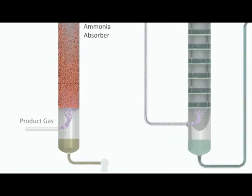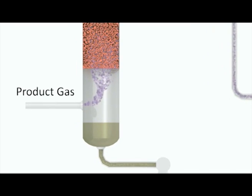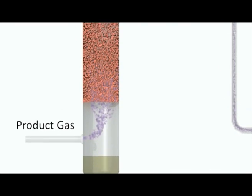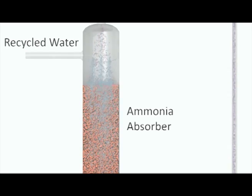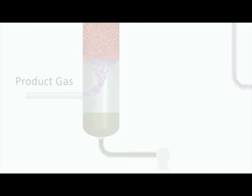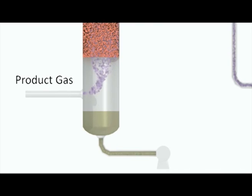Product gas is fed into the bottom of an absorber, where it flows up through a random packing against a falling stream of recycled water. This results in ammonia being absorbed out of the gas and into the water, to be collected in a sump at the bottom of the absorber, from where the resultant water stream can be sent to the process water stripping section to recover the ammonia.